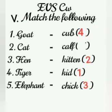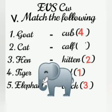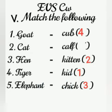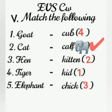And last one, fifth one is elephant. What is the young one of elephant? Yes, the young one of elephant is a calf. So, now write number five.